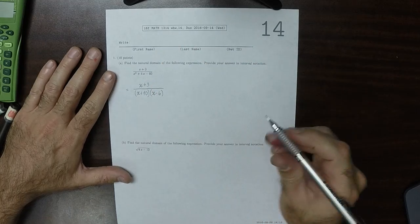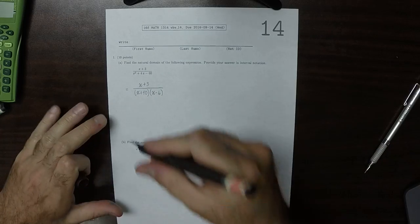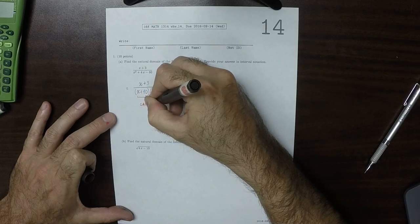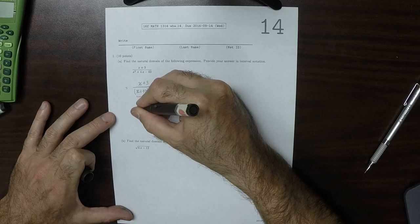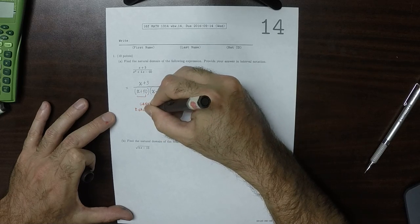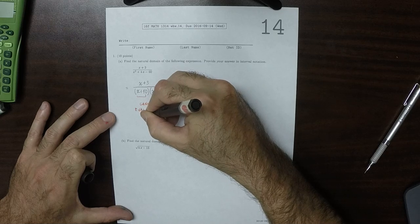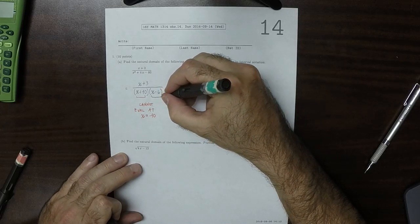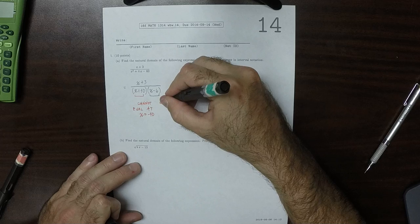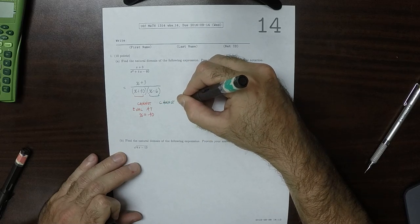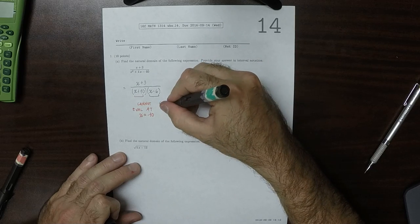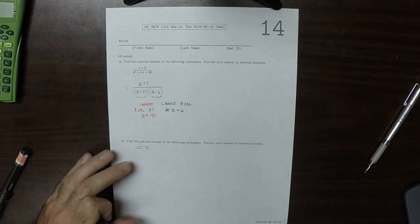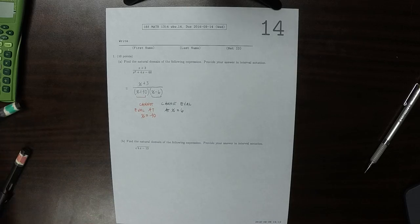So this expression, this is telling you that you cannot evaluate at x is negative 10, because that would cause the division by zero. This one is similarly saying, you cannot evaluate at x is 6. So those are the only two places where you cannot evaluate.